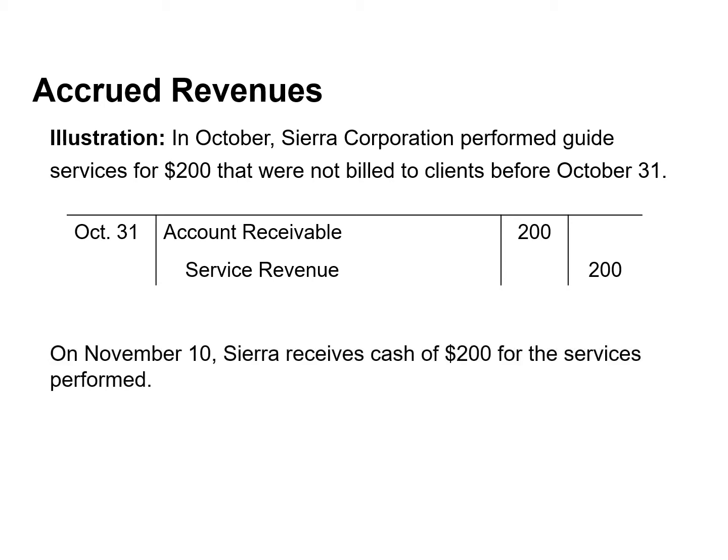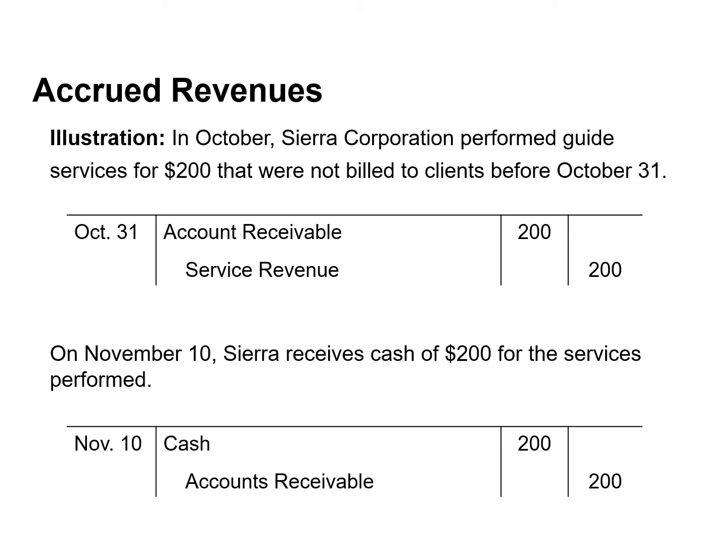On November 10th, Sierra receives cash of $200 for the services performed in October. The company records the collection of the receivables by a debit, or an increase, to cash and a credit, or a decrease, to accounts receivable.